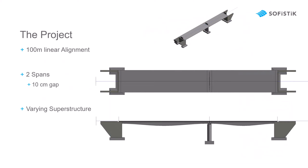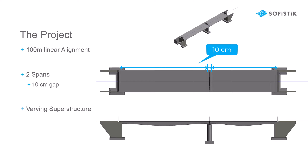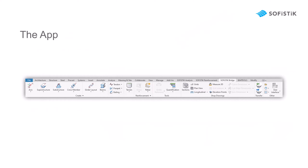Here we have the project. It will consist of a 100 meter long linear alignment, which will represent our axis. We will create two superstructure spans with a 10 centimeter gap in between them, and we will vary the height of the superstructure along the axis stationing.